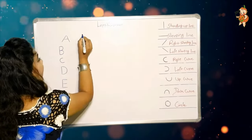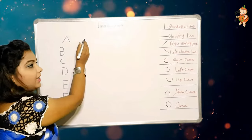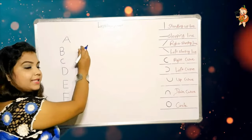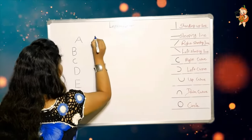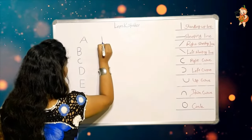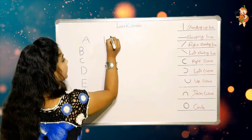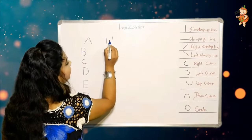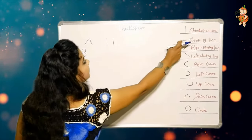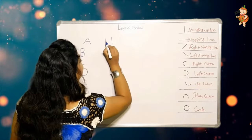How to make H? It's very simple — one standing up line, another standing up line, and one sleeping line.